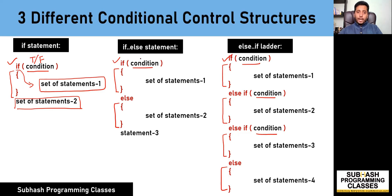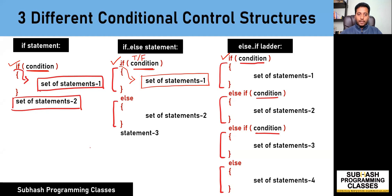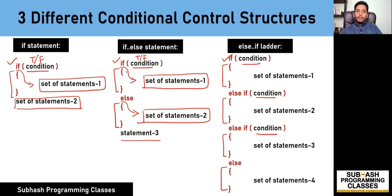Now coming to the if-else statement. If this condition evaluates to be true, then the program control will enter into the if block and execute the set of statements that are part of the if block. Whereas if this condition results in false, then the program control will ignore the if block, enter the else block, execute the set of statements that are part of the else block, and then come out and start executing the rest of the statements after this if-else control structure.